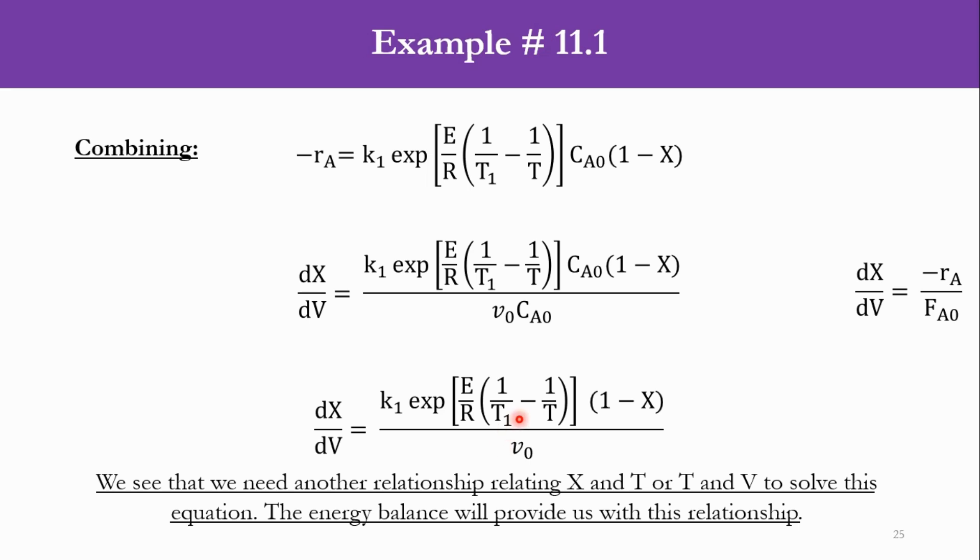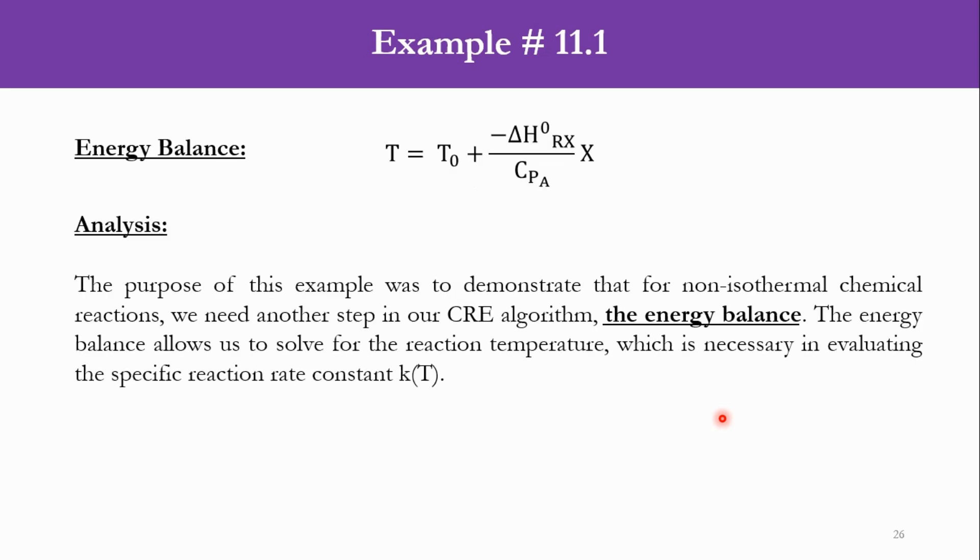To get the value of temperature, we need another equation called the energy balance equation. Previously we had 5 steps: mole balance, rate law, stoichiometry, combine, and evaluate. If it was isothermal, we could go to evaluation. But for non-isothermal systems, we need an energy balance equation: T = T0 + (-ΔH°rx/CpA)·X.